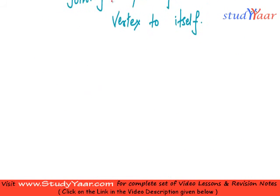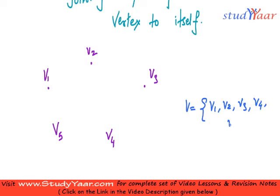So let's take an example. Let us suppose I have couple of vertices. This is V1, then I have V2 over here, V3 over here and V4 and V5. So what is V over here? Your V is the set of vertices which is V1, V2, V3, V4 and V5.